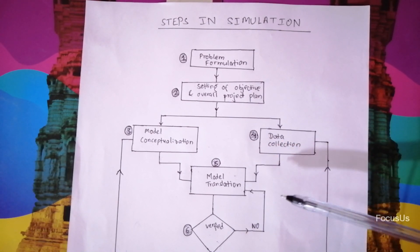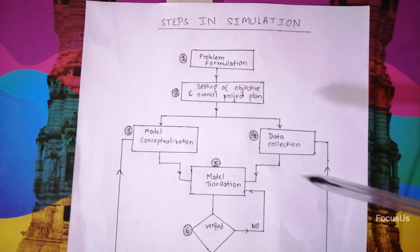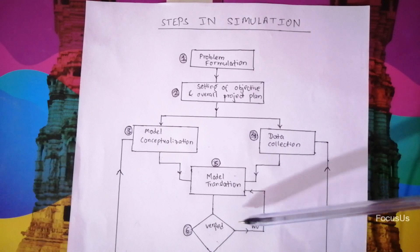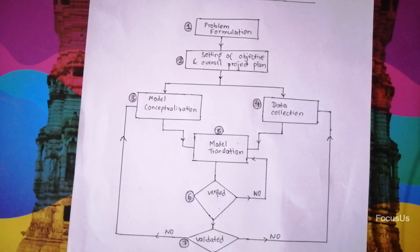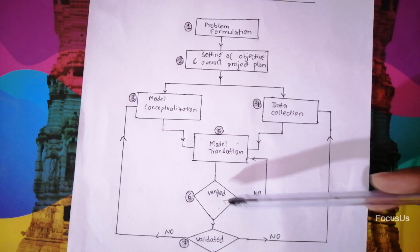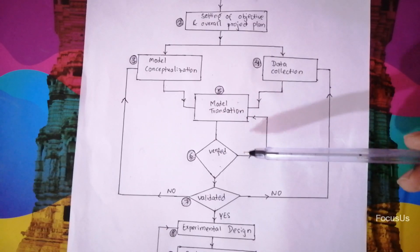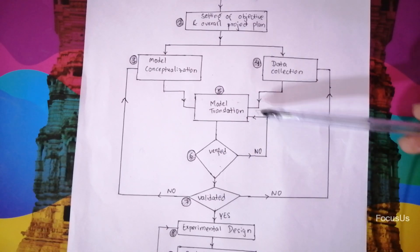Once we have translated the model or made the model then we go to the sixth point which is verification. What is verification? It is just the process of ensuring that model behaves as intended, usually by debugging or through animation. So verification is necessary but not sufficient for validation. If it is not verified then we just go to the model translation process again.